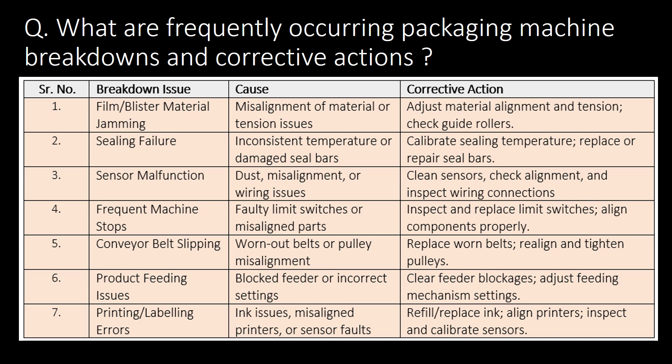What are the frequently occurring packaging machine breakdowns and corrective actions? The commonly observed breakdown issues are film or blister packing material jamming, sealing failure, sensor malfunction, frequent machine stops, conveyor belt slipping, product feeding issues, and printing or labelling errors.